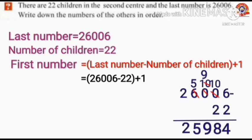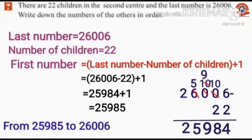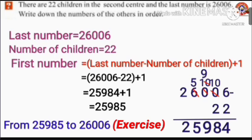Then add 1 with this number: 25,984 plus 1, which equals 25,985. Here the first number is 25,985. Then you have to write 22 numbers in order from 25,985 to 26,006. You have to write this as another exercise in your math note.